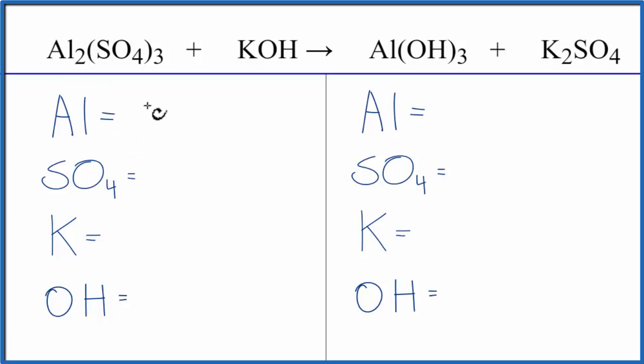Let's do it. Two aluminums, three sulfates, one potassium, and one hydroxide. On the product side, one aluminum, one sulfate, two potassiums, and three hydroxides.